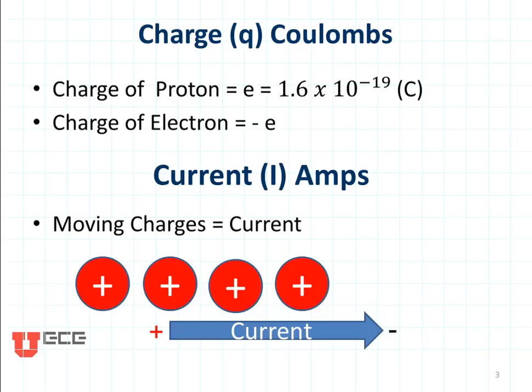Charge, represented by Q, is typically given in Coulombs. The charge of a single proton, a positively charged element E, is equal to 1.6 times 10 to the minus 19th Coulombs. The charge of an electron is the opposite or the negative of that.